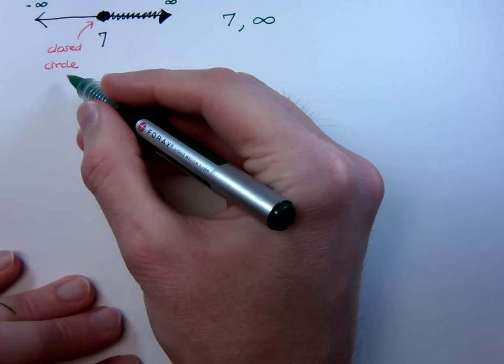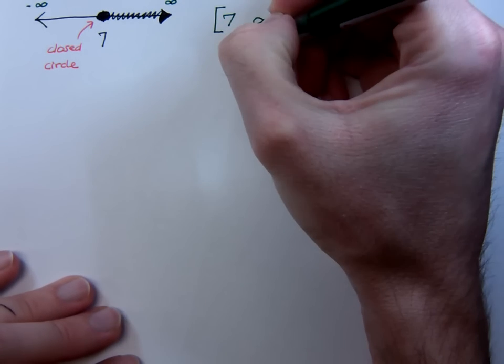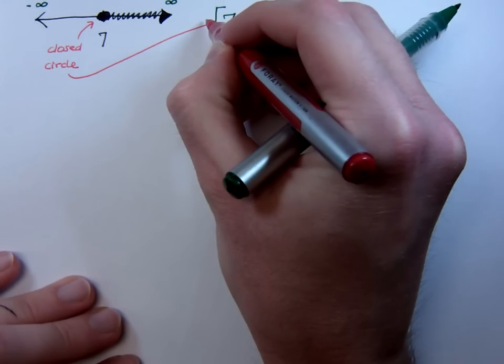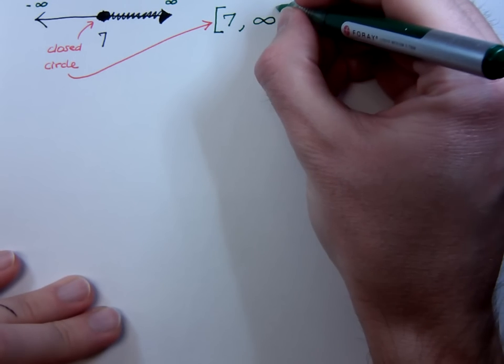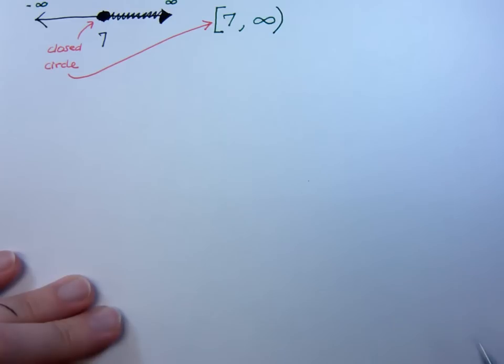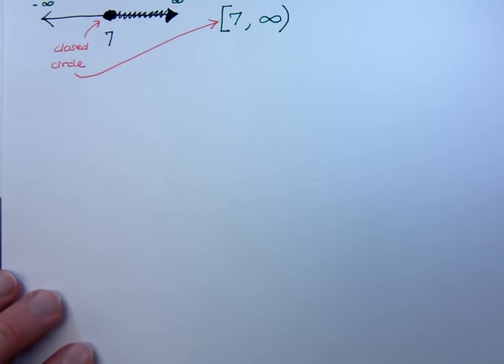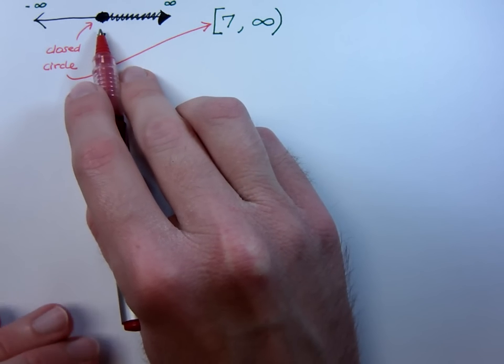Since this is a closed circle, that means we will have a bracket. So a closed circle causes us to have a bracket. And again, we will always use parentheses on the infinity. In fact, the only time that we're going to have a bracket with our interval notation is when we have a closed circle.